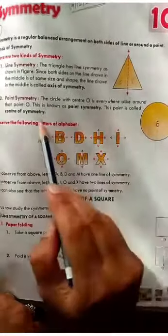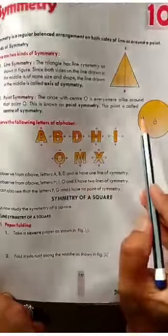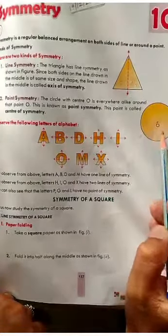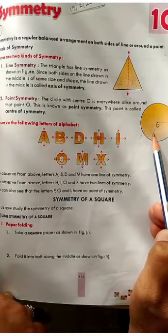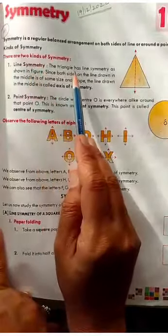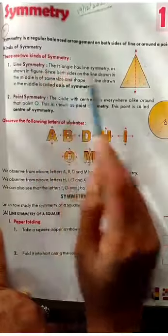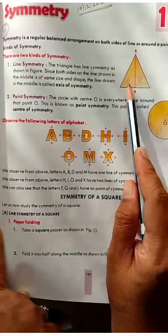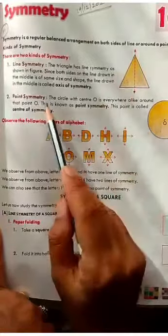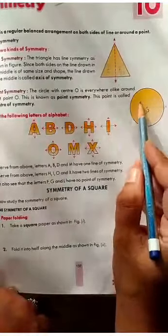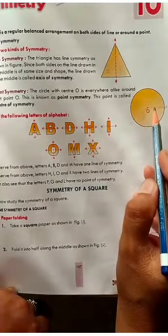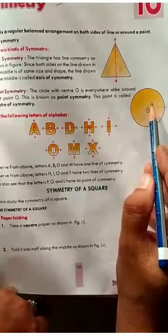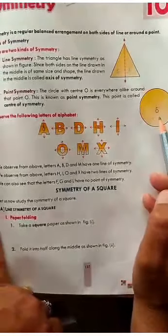The second type is point symmetry. In a circle, the circle with center O is everywhere alike — means same around the point. So this is called point symmetry. Line of symmetry means we separate the figure into two equal halves with the help of a line. Point of symmetry means around the center of the circle, all sides have equal length.